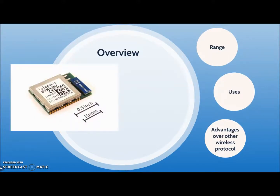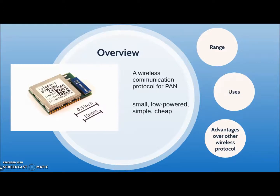Coming from the waggle dance of the honeybee, Zigbee is a communication protocol suitable for creating personal area networks with small, low-power digital radios. The development of Zigbee targeted a simpler and cheaper wireless personal area network compared to Bluetooth and Wi-Fi. Devices transmit data through mesh networking, and the chips are generally integrated with radios and microcontrollers, built on the physical layer and media access control defined in IEEE standard 802.15.4 as a low-rate wireless personal area network.